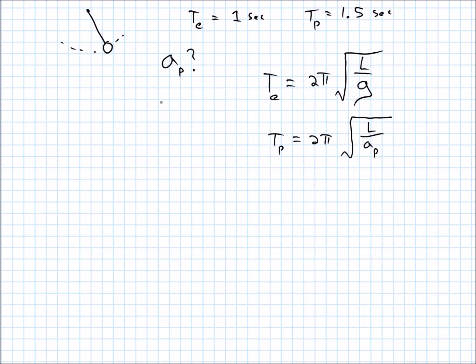So, squaring both sides and rearranging, I get T_e squared over 4 pi squared is equal to, so solving this one, we would get T_e over 2 pi is equal to the square root of L over g, and then square both sides, gets rid of that square root, and then we multiply over the g, and then we get T_e squared g over 4 pi squared is equal to L.